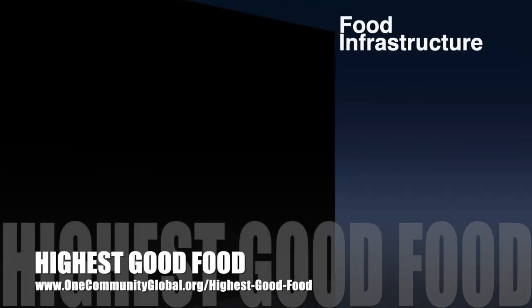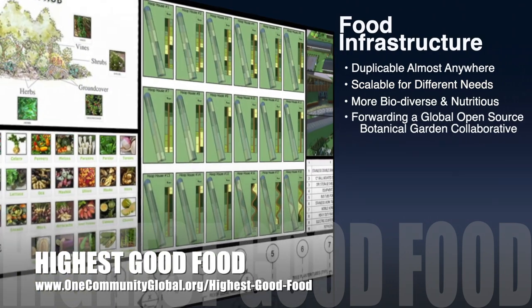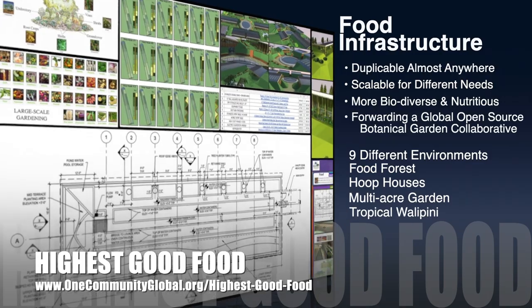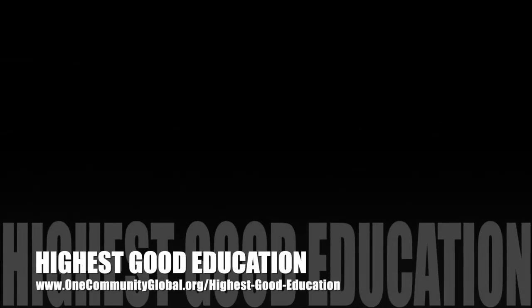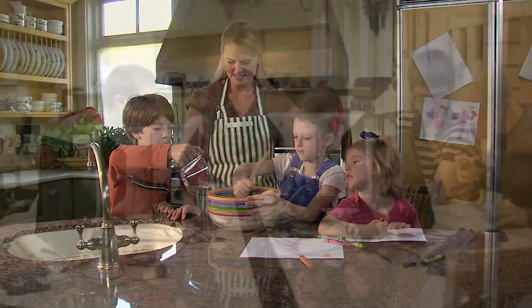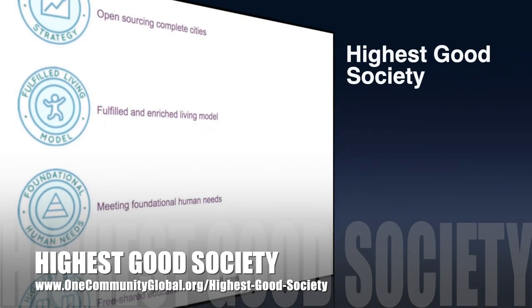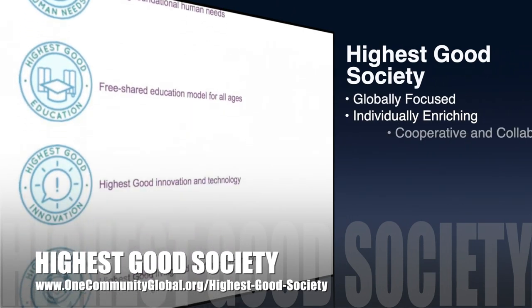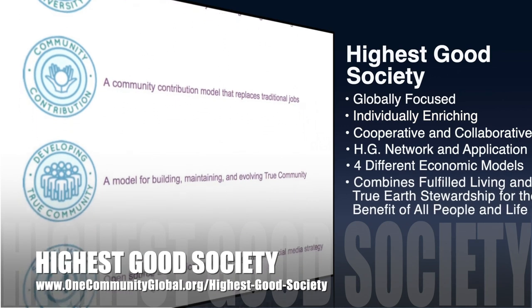One Community's approach to highest good food is duplicable almost anywhere, scalable for different needs, more biodiverse and nutritious, part of forwarding a global open source botanical garden collaborative, and includes nine different free shared and duplicable growing environments. The highest good education component is complete and ready to launch once on the property — designed for all age groups, adaptable to any schooling environment, inspiring and fun, and includes national standards, all national subjects, lesson plans, teaching strategies, learning strategies, classroom design, and more. The One Community approach to highest good society is globally focused, individually enriching, cooperative and collaborative, includes a highest good network and application, four different economic models, and combines fulfilled living and true earth stewardship for the benefit of all people and all life on this planet.